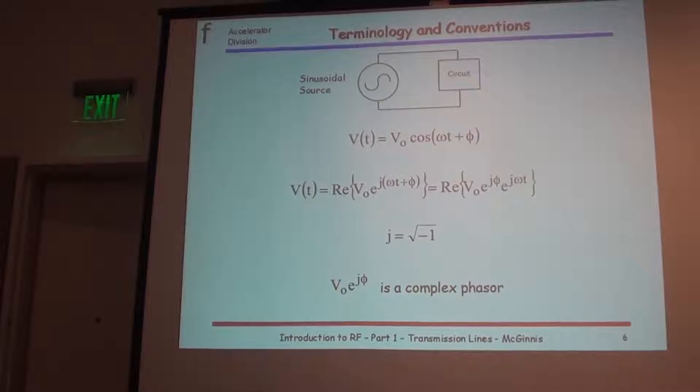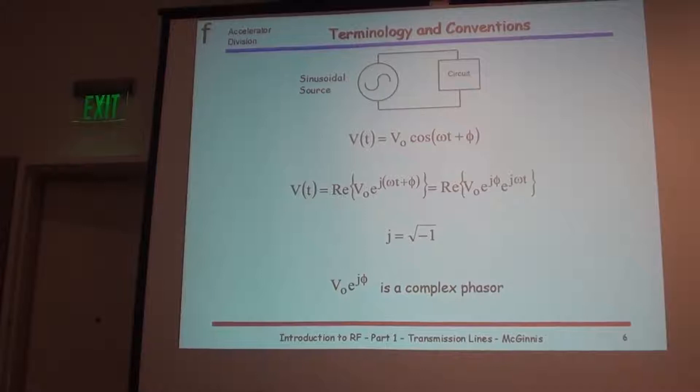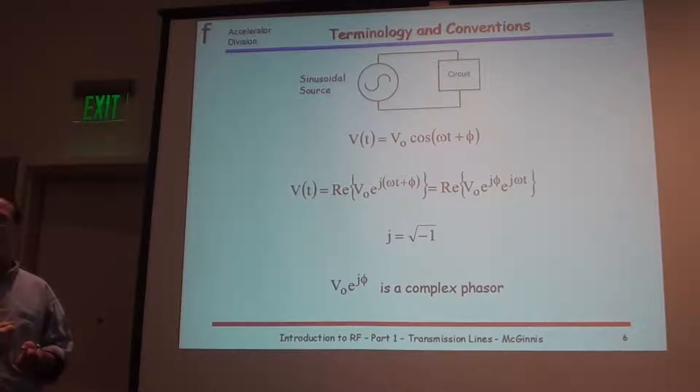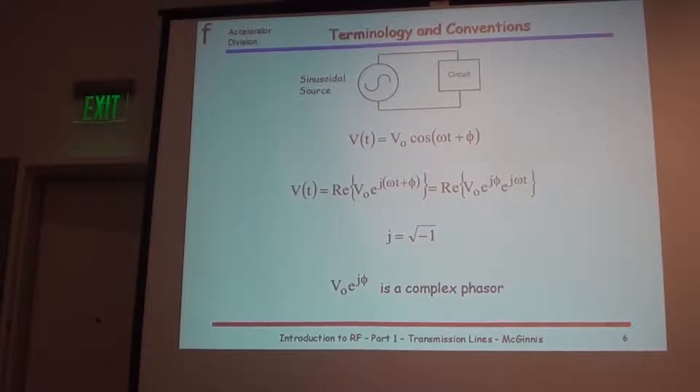To characterize a wave in time you have to think about position and velocity — that's the time domain. In the frequency world, you always have to think about two things: what's your amplitude, and what's your starting point — those are the two things you always need. You need two things to describe any wave in the frequency domain.